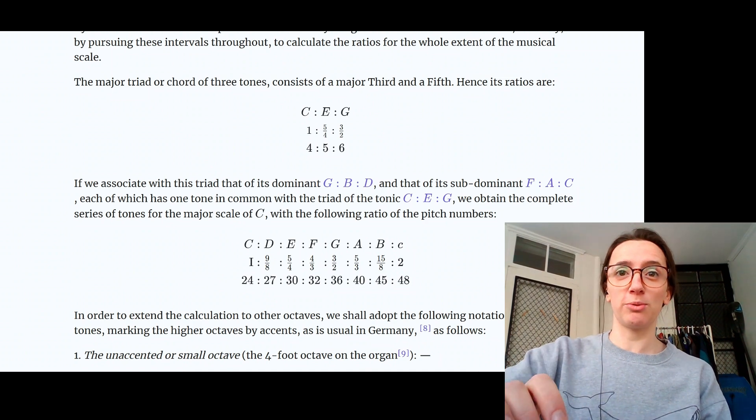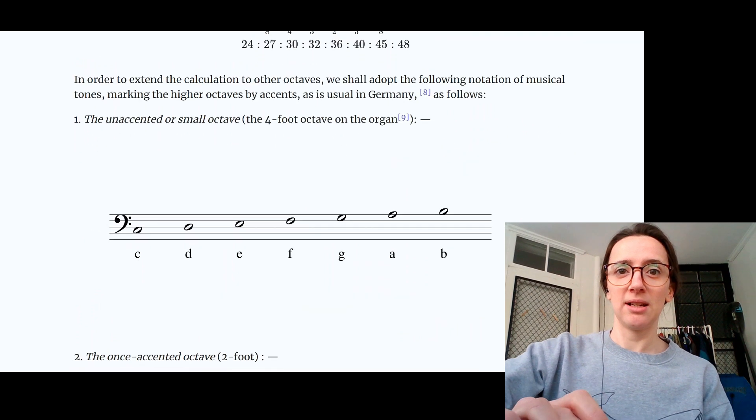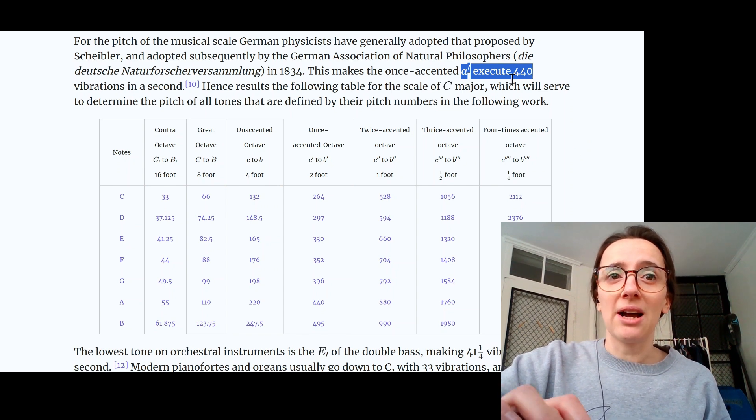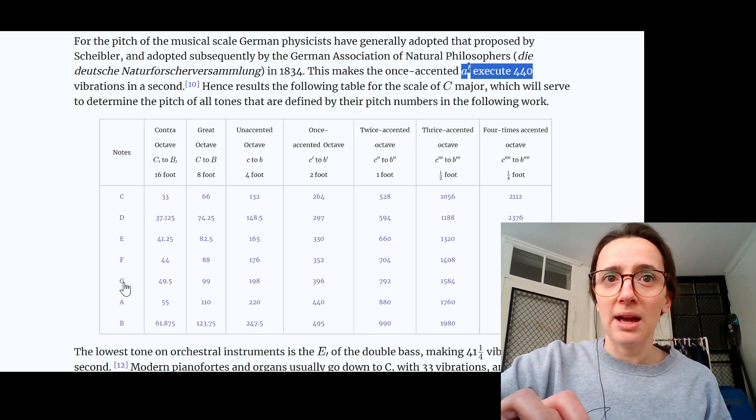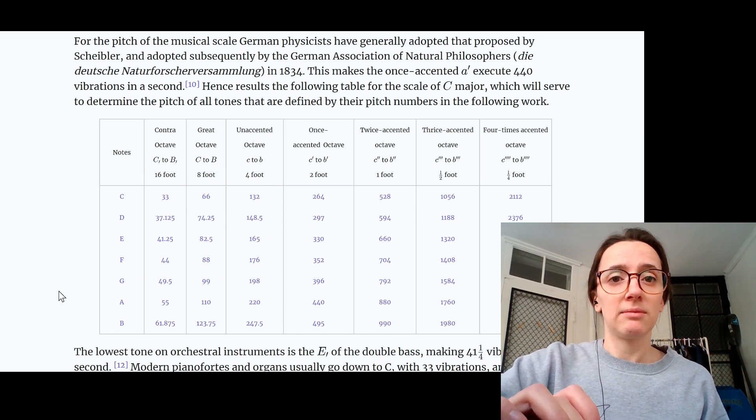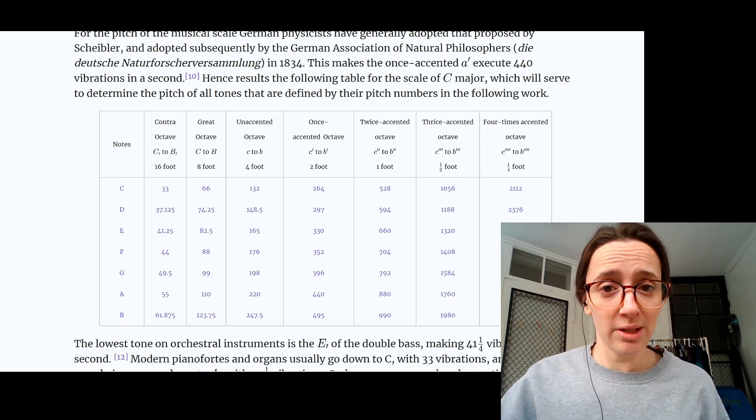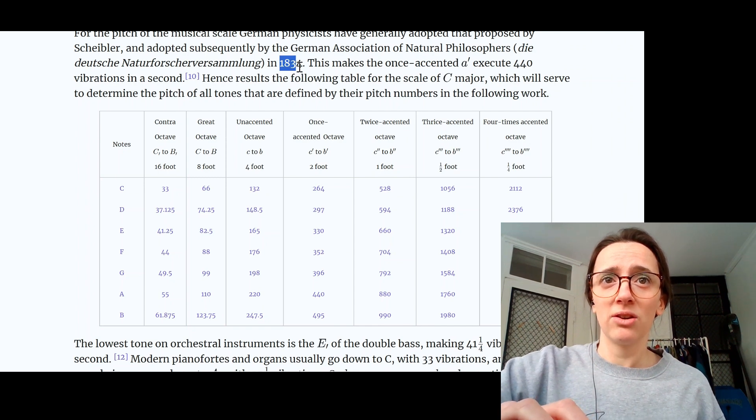In the next part of the chapter, Helmholtz uses those ratios to calculate the rest of the notes in a C major scale. Then he uses the convention of A at 440 vibrations in a second to calculate the pitch numbers of all the notes in a C major scale. And if we click on them, we can hear them at all 1, 2, 3, 4, 5, 6, 7 octaves. Let's hear an A.